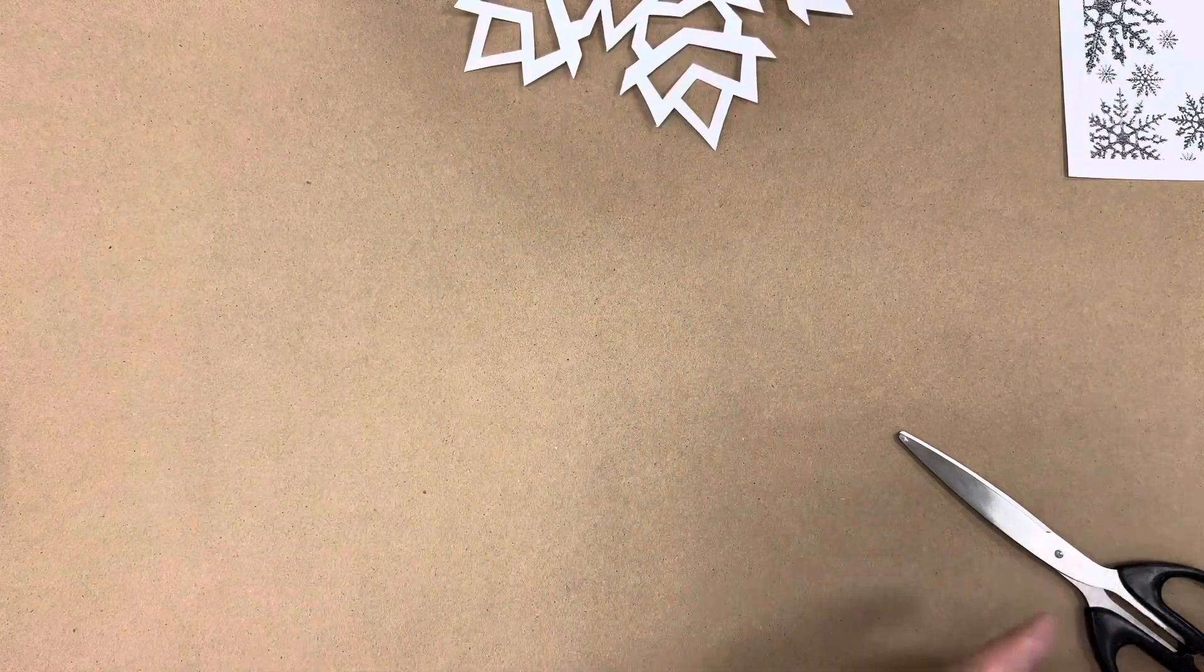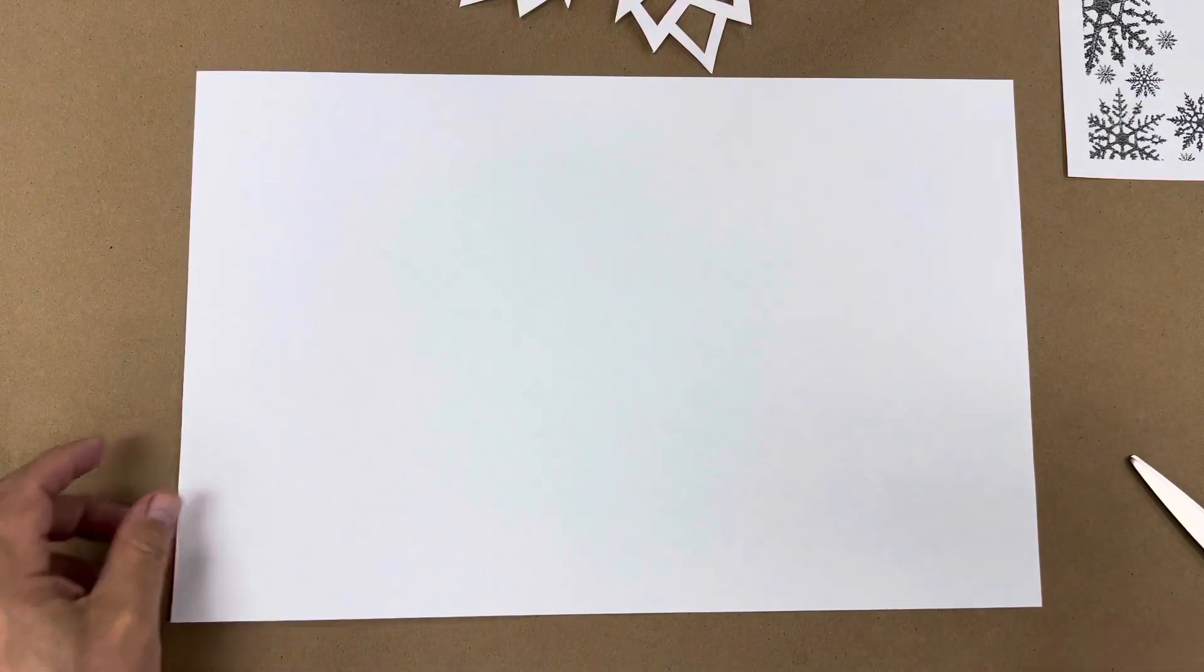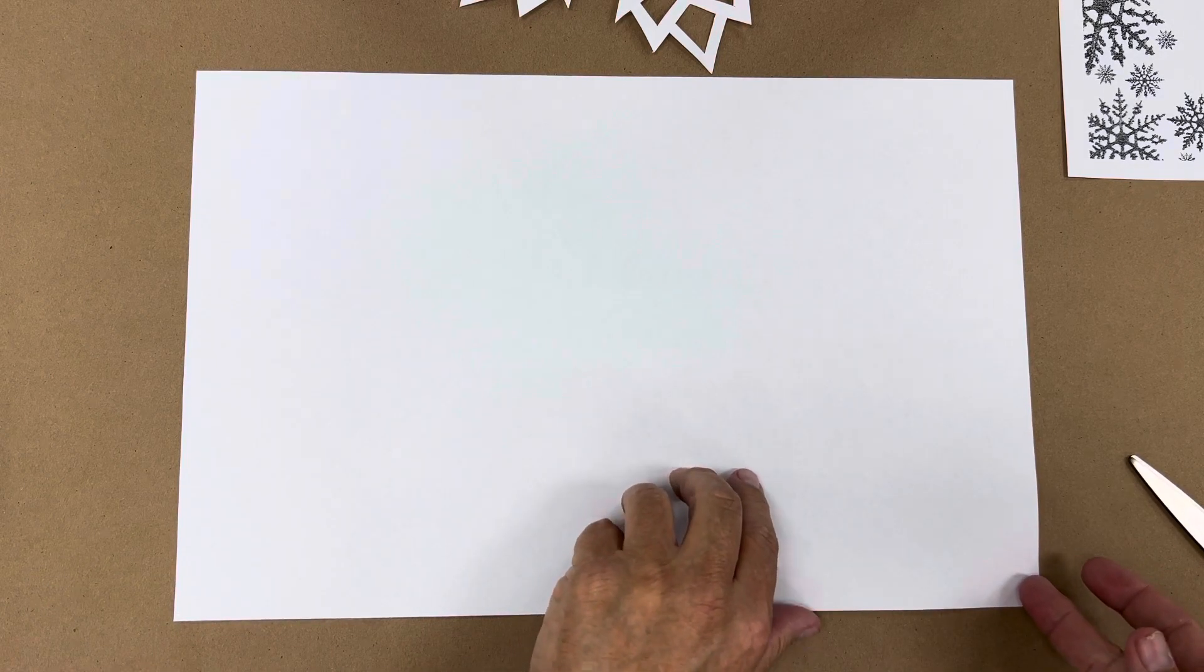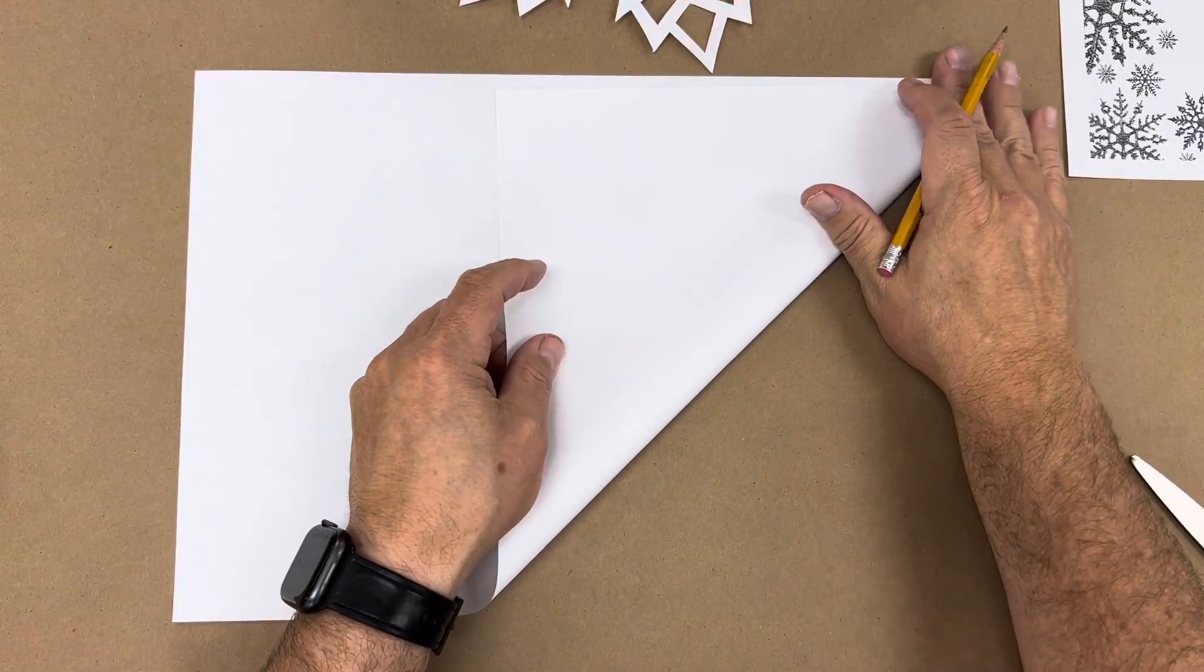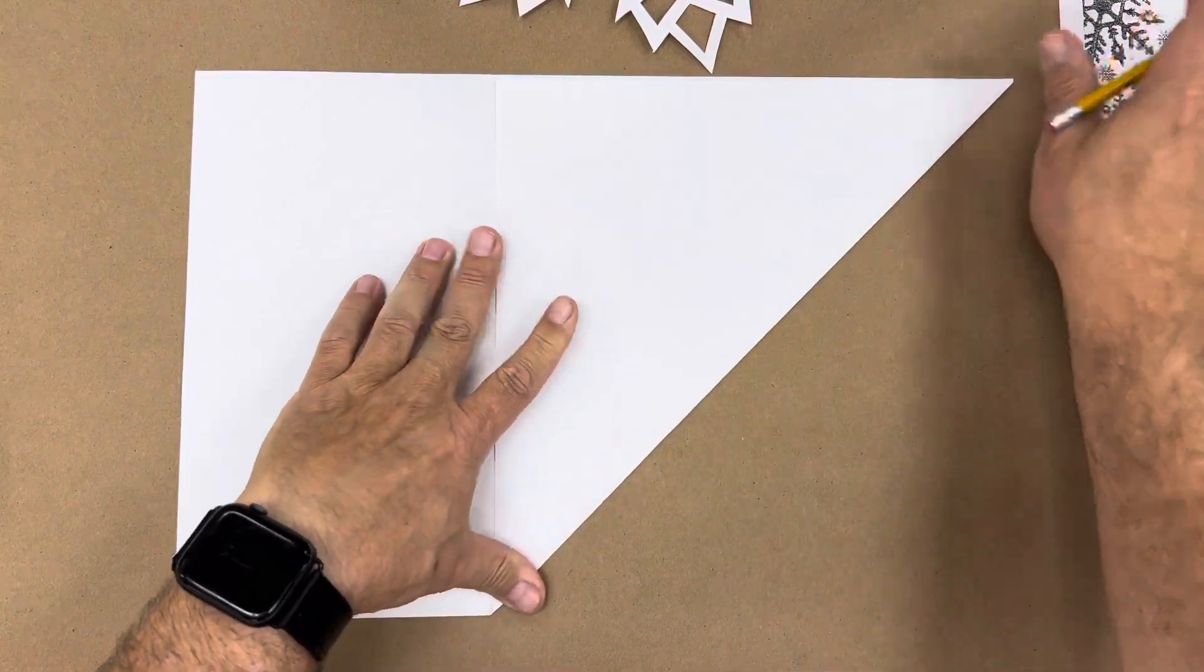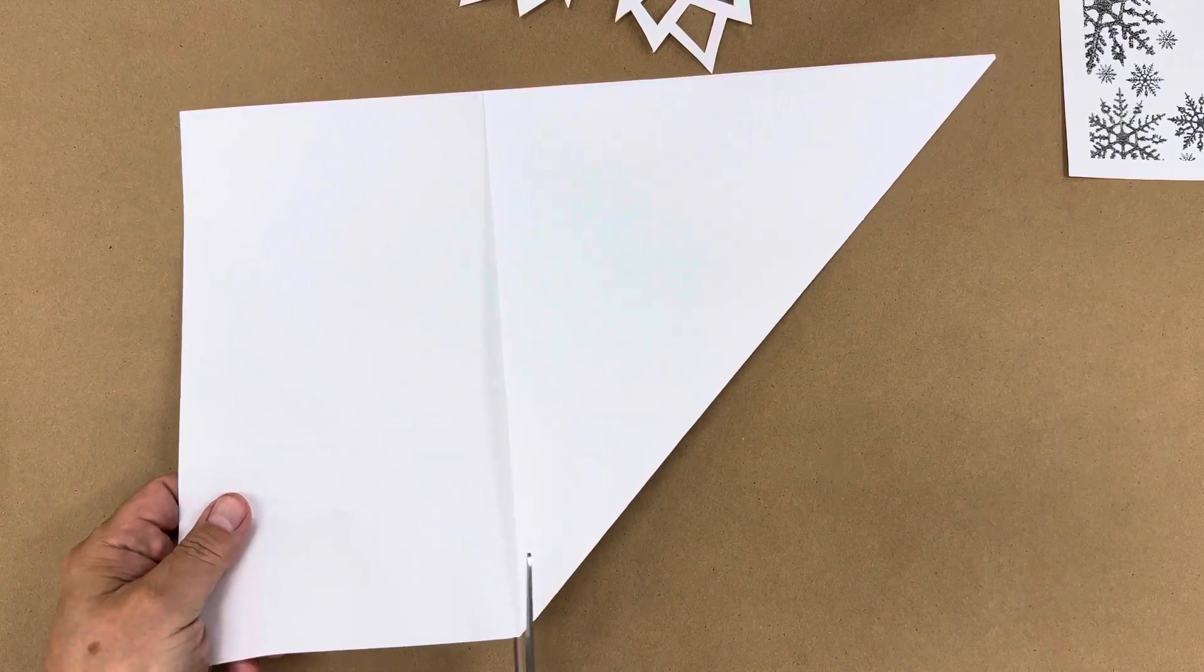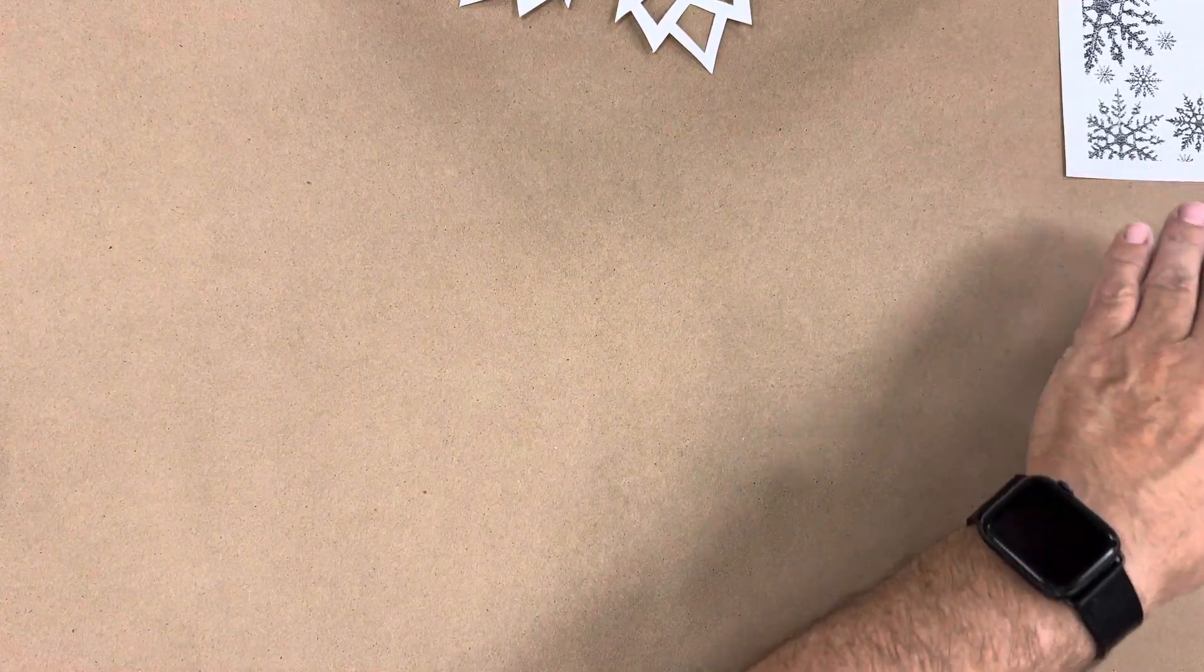So you could start with a regular piece of copy paper, and it could be a rectangle, but we need to get it to a square. So what you do is you fold the short side to the long side. And then you cut off any extra, and that will get you to a square. So we just take this and we go ahead and cut along that line. So I've got some squares already cut, so we can do this fairly quickly.